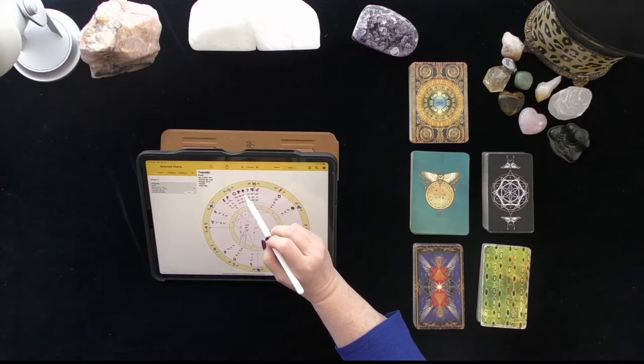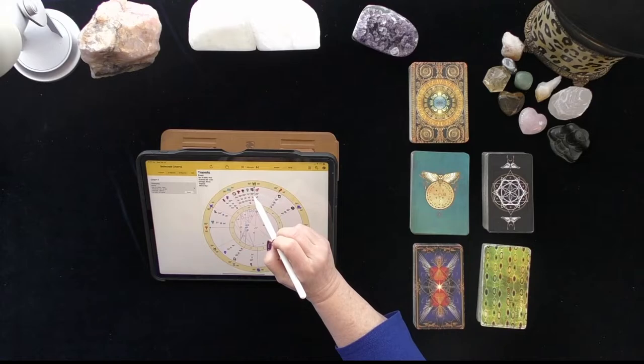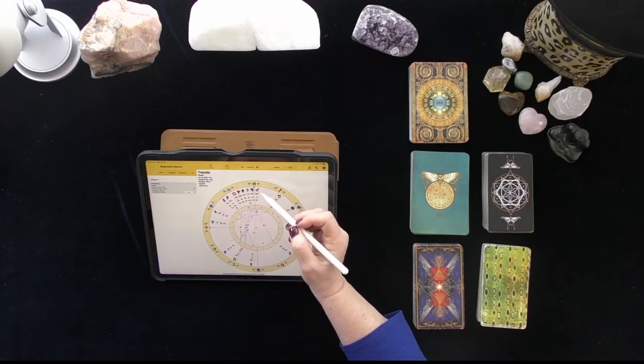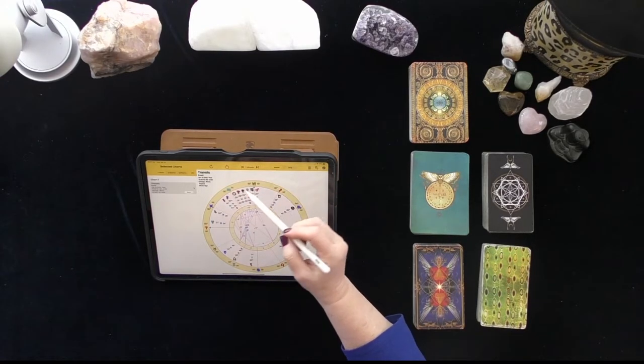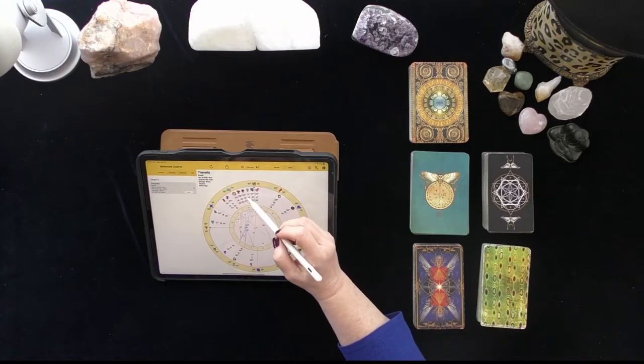But what we're seeing here is you also have Juno. So we have this lovely trifecta here of Cupido, Venus and Juno, the absolute father of good luck and tidings and good rewards for good karma.